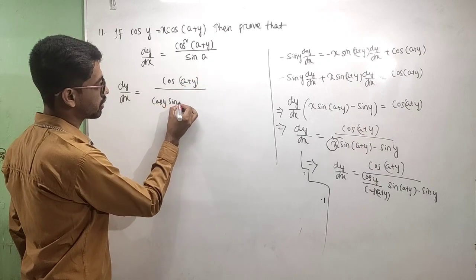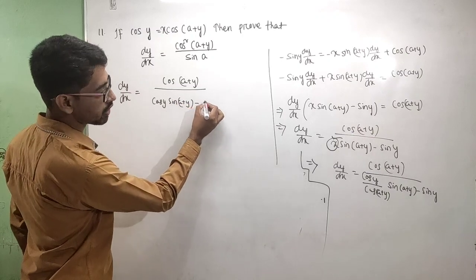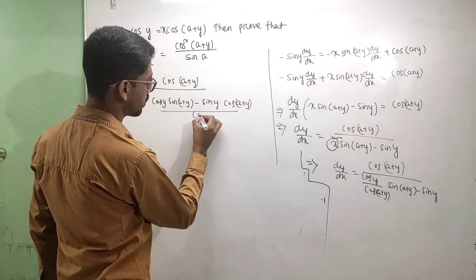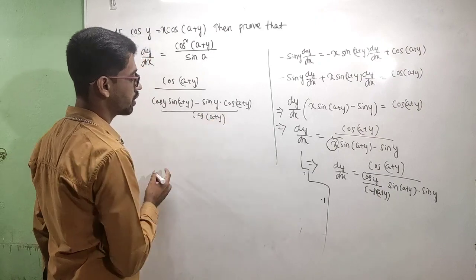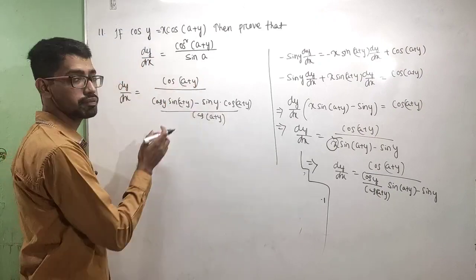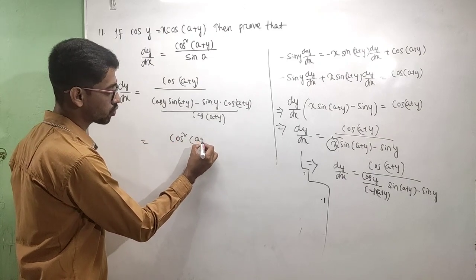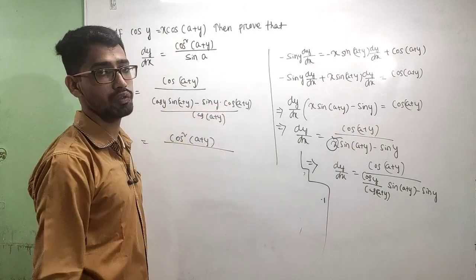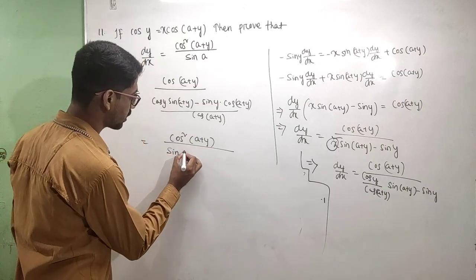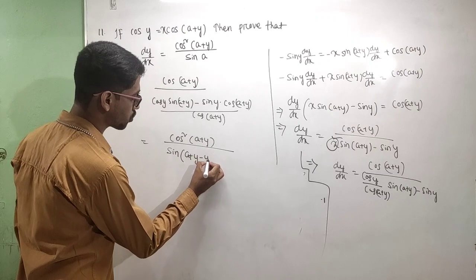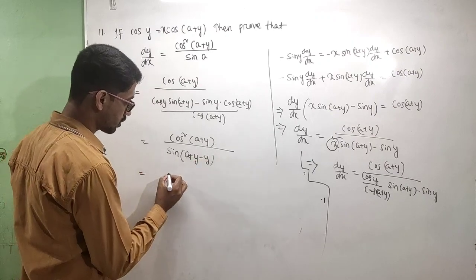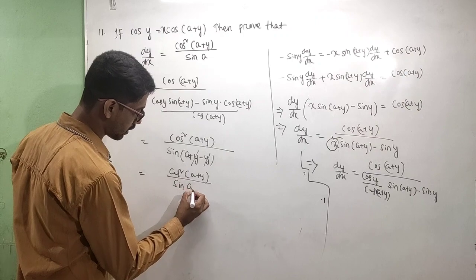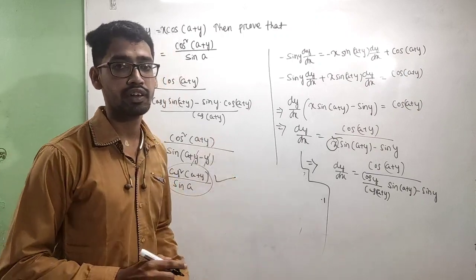Simplifying: cos(a + y) into cos(a + y) gives cos²(a + y), all divided by [cos y · sin(a + y) minus sin y · cos(a + y)]. Applying the sine subtraction formula: sin(a + y − y) = sin a. So the denominator becomes sin a, giving the required solution: cos²(a + y) / sin a.